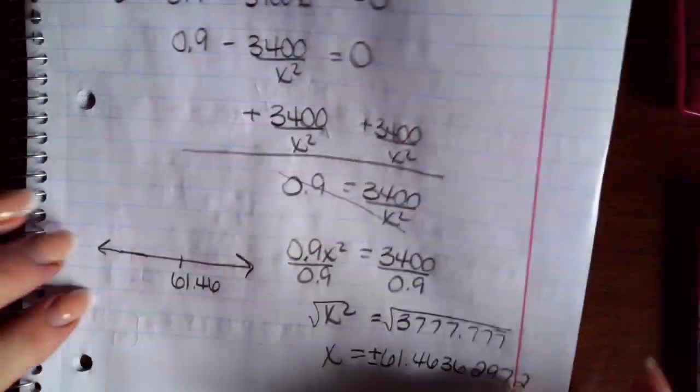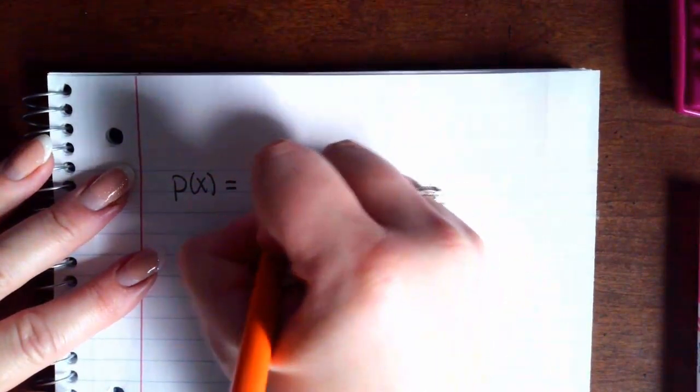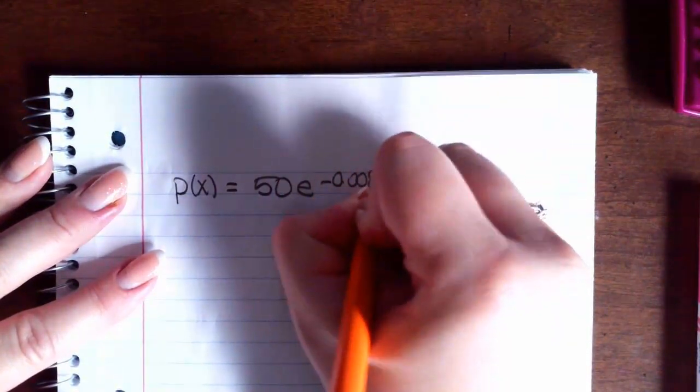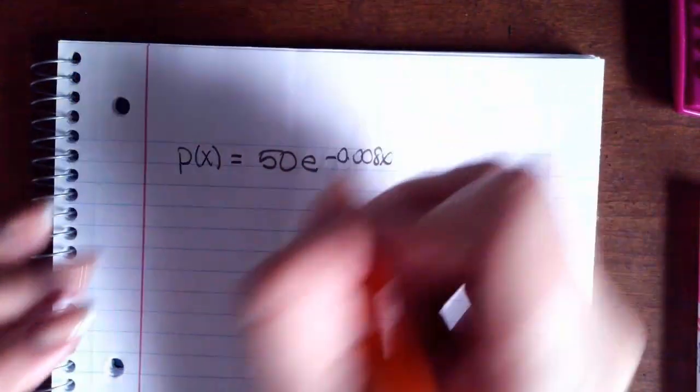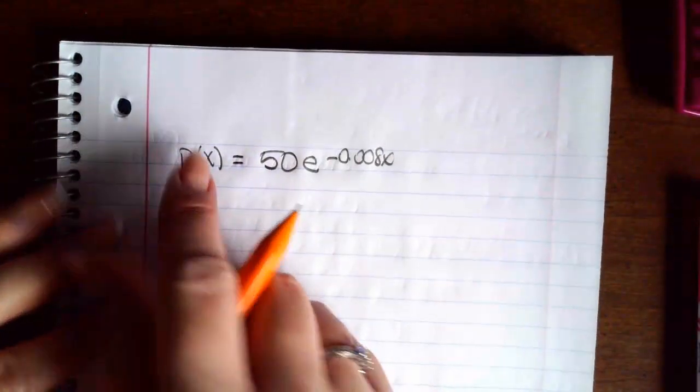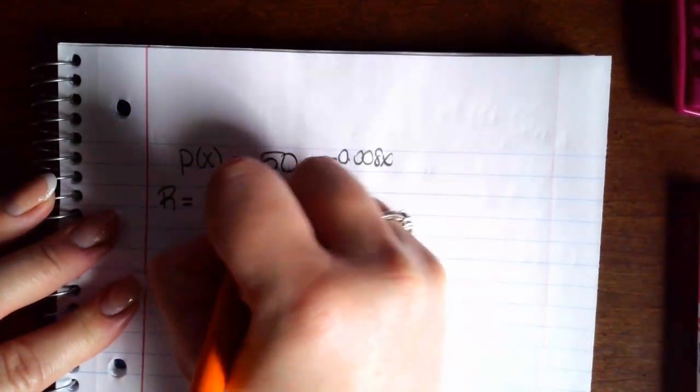Alright, last one in this section, this extremely long section. A company has a price demand function of p of x equals 50 e to the negative .008x dollars per item when x items are sold. Determine how many items the company must sell in order to maximize revenue. So this is a price demand function. Revenue is x times p of x.